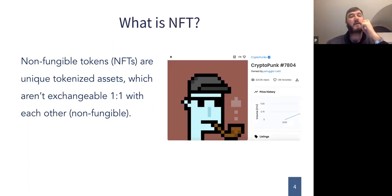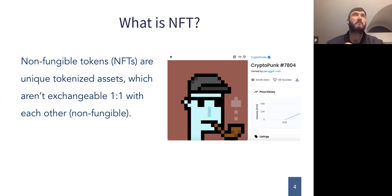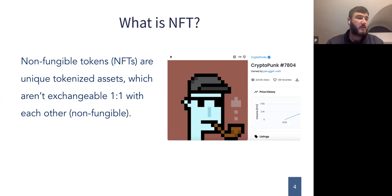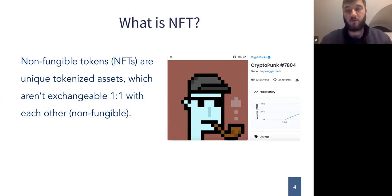NFT - a non-fungible token - is pointed to representing ownership of a certain asset. It could be a digital asset or it could be a pointer to a physical asset but recorded digitally. Since it's a unique thing, they're not exchangeable one-to-one with any other things. For example, on the picture we see the quite famous CryptoPunks - there are 10,000 of them, they're all different, therefore the prices for them will also be different, even though from the computer's point of view it's just another picture.